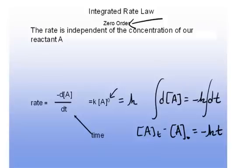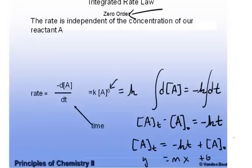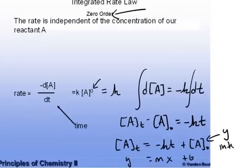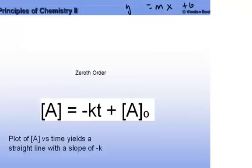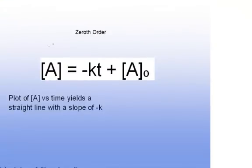And you can also rewrite it in a y equals mx plus b form, and you'll see that [A] at time t is equal to negative kt plus [A] at time zero. And so this would be your y in your y equals mx plus b. So this is your y intercept, and negative k would be the slope. This is the y = mx plus b format.